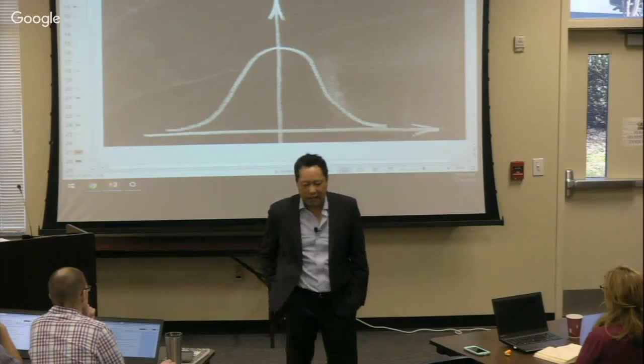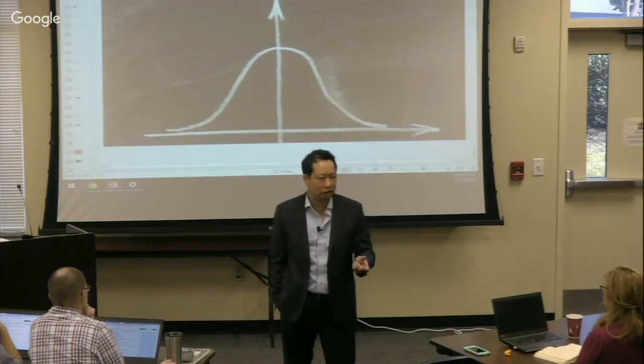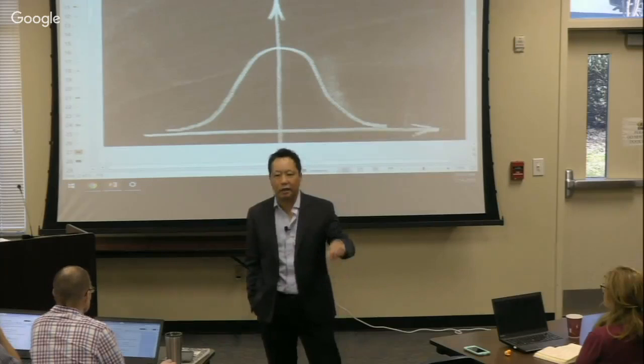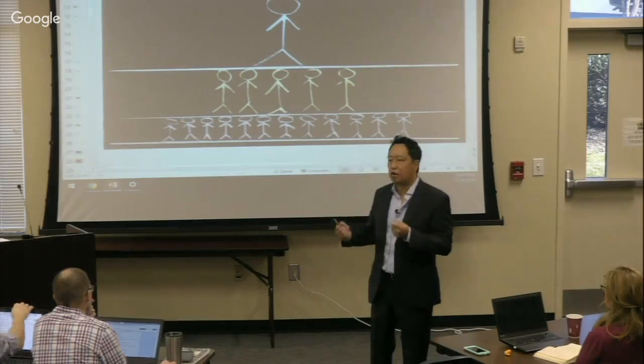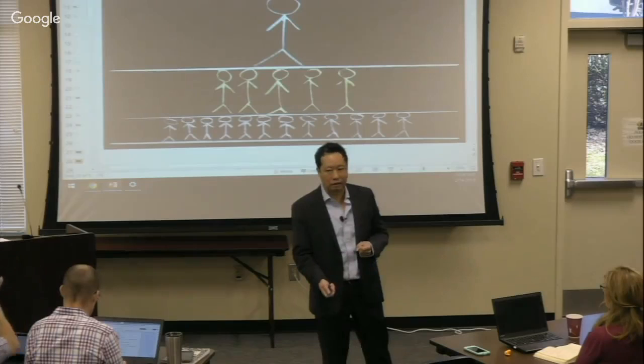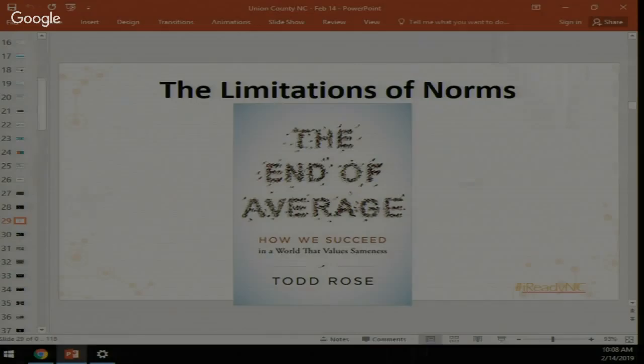Norms are good for rank-ordering students but don't work well for understanding where kids are relative to standards. There's a book called 'The End of Average' by Todd Rose, a professor at Harvard's Graduate School of Education. Todd's own story is interesting — he was a high school dropout getting D's, but once he figured out a personalized approach to learning, he went back, got his GED, went to undergrad, and eventually earned his doctorate from Harvard.